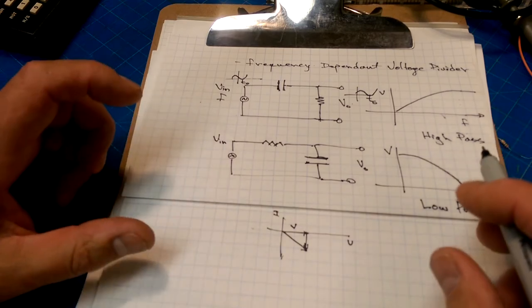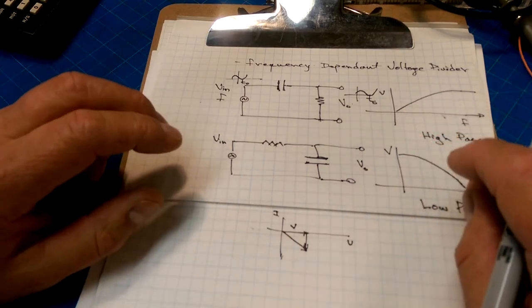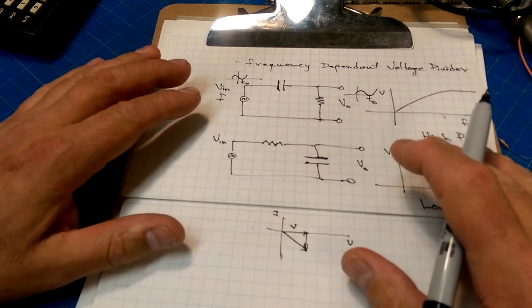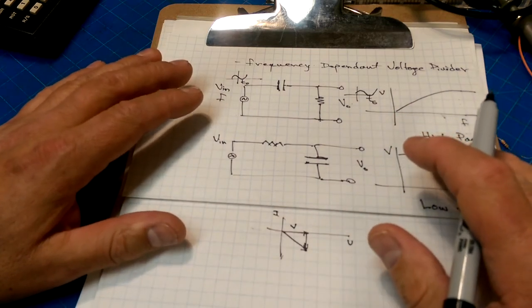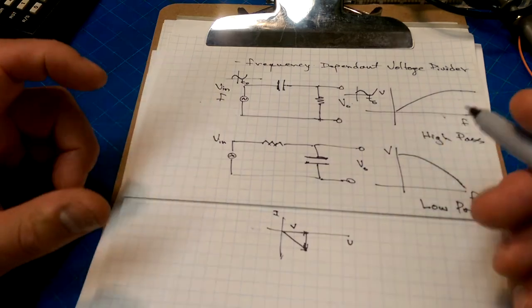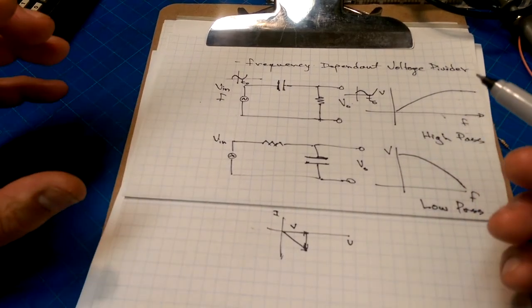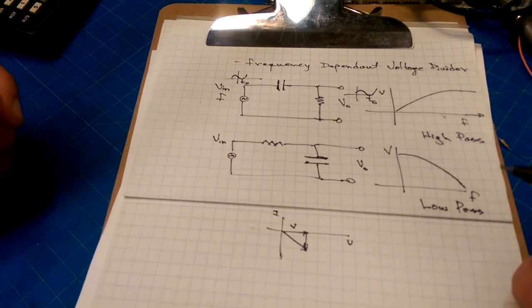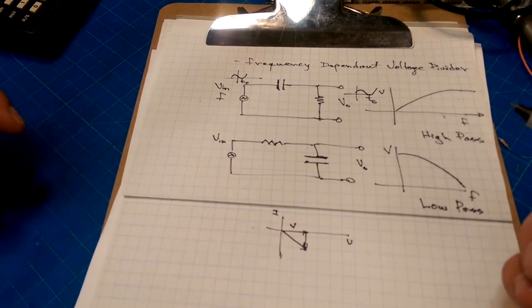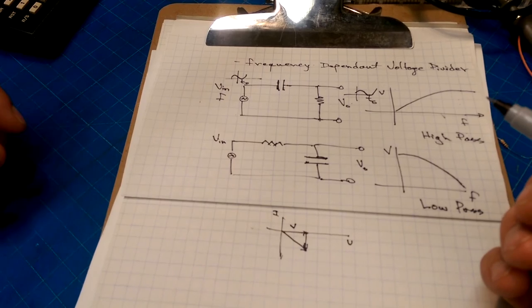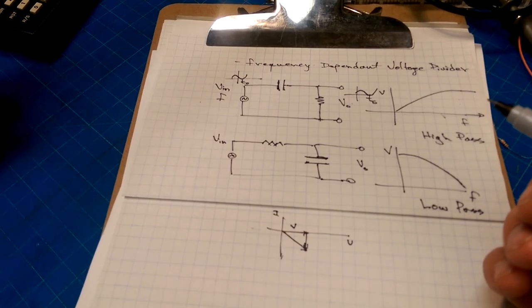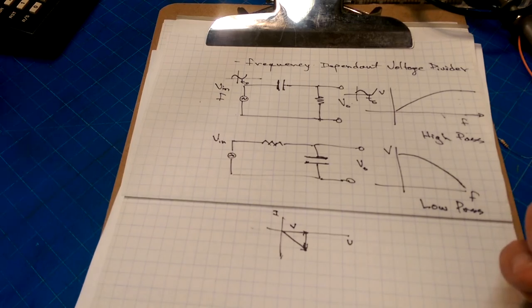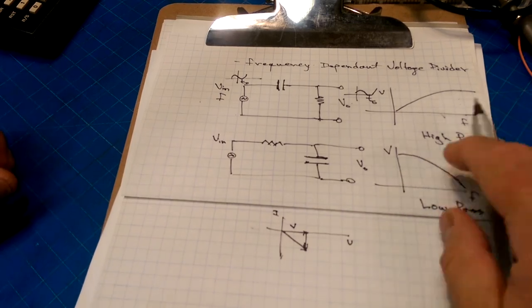But like I said, first-order approximation, reasonable enough. You can get quite a bit of mileage out of thinking about RC filters using the analysis that I've just done. So, okay, I hope that was helpful. Obviously, if you have any questions, leave them in the comments. I will try and answer them as best I can. And thanks for watching, and talk to you soon.